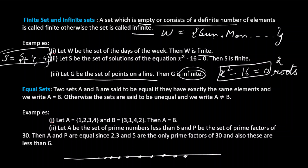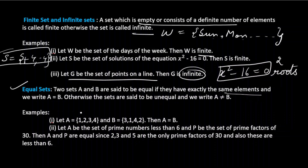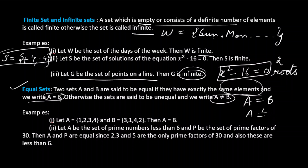Now let us discuss equal sets. Two sets A and B are said to be equal if they have exactly the same elements and the same number of elements, and we write A = B. If they are not equal, we write A ≠ B.